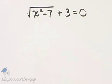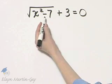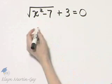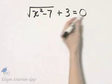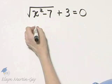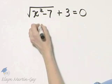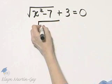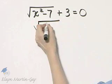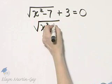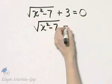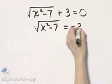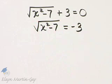Let's solve this radical equation. If possible, isolate a radical. I can isolate this radical by subtracting 3 from both sides, so I'll have the square root of x squared minus 7 is equal to negative 3.